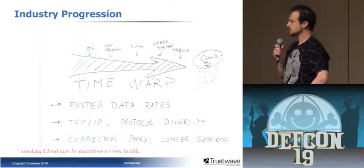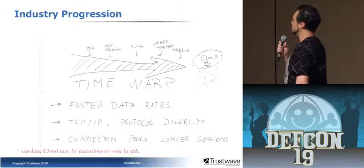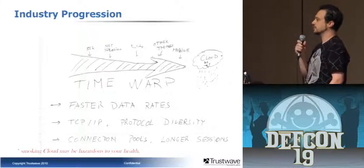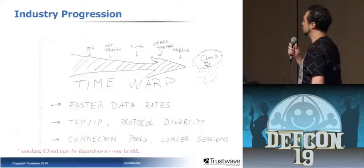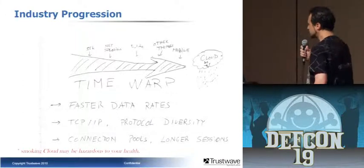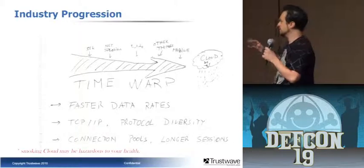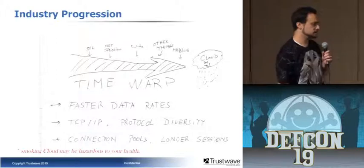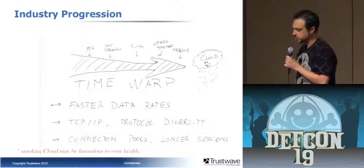A lot of stuff happened from then. Progressing through time, I took arbitrary things out of the history of networking: 56K, then the internet explosion, YouTube, mobile, and now the cloud. Stuff is a lot faster — TCP/IP, protocol diversity. It's not as simple as RD and SD anymore, because you're talking about a lot of different protocols, a lot of different hosts, a lot of different stuff going on at the same time. It's a very, very chatty thing we've got going on.